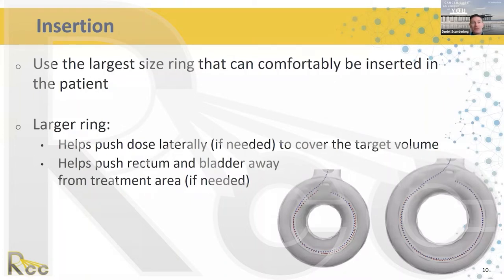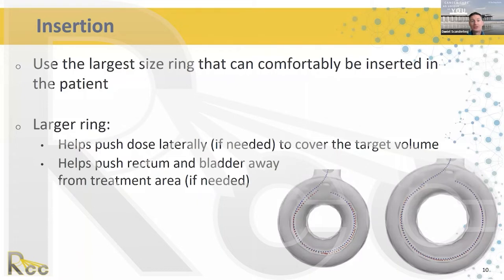Some clinics have in-room imaging available. Transrectal or transabdominal ultrasound during placement can help visualize correct applicator positioning and prevent perforation. Fluoroscopy can also be used during insertion to help visualize the implant. Some implant in a room with CT or another imaging modality available during the procedure. It's important to check with the physician on their training, ensure all equipment is working, and that all staff are properly trained in its use.